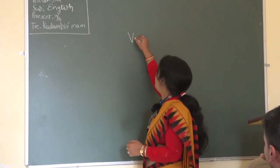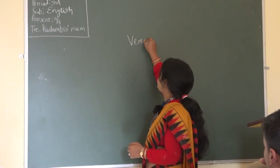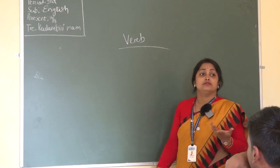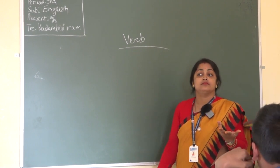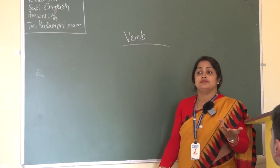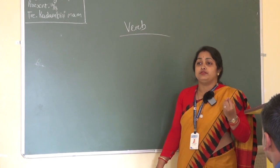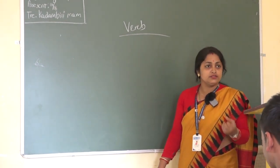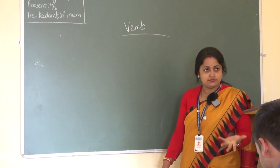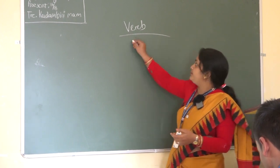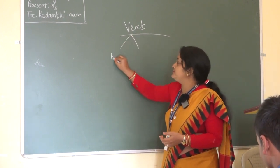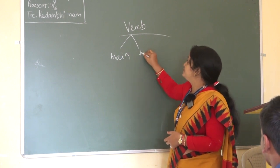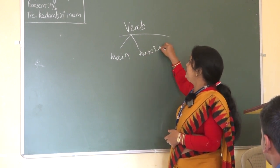So, first you tell me what is verb. By those words we show some action or some activities are done — that is known as verbs. Okay, it is mainly divided into two types. One is main verb and another is auxiliary verb.